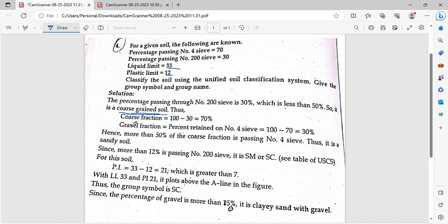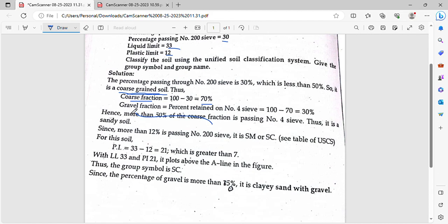Now, coarse fraction. The percentage retained is 70%. This is the gravel fraction. Percentage retained on number 4 sieve.